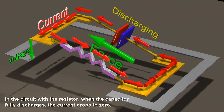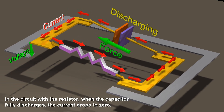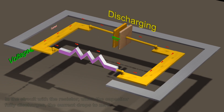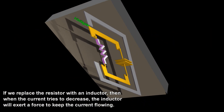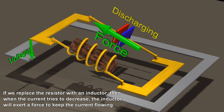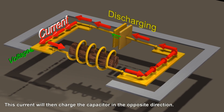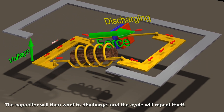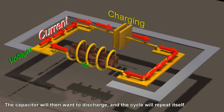In the circuit with the resistor, when the capacitor fully discharges, the current drops to zero. If we replace the resistor with an inductor, then when the current tries to decrease, the inductor will exert a force to keep the current flowing. This current will then charge the capacitor in the opposite direction. The capacitor will then want to discharge, and the cycle will repeat itself.